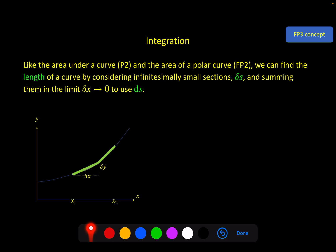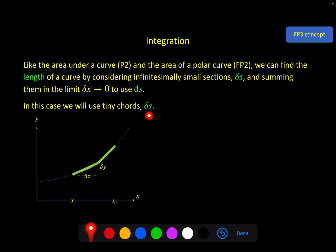As already seen with area under a curve, we can find the length of a curve from x₁ to x₂ by considering infinitesimally small sections. But this time we're not going to use tiny trapeziums or polar sectors — we're going to use tiny chords, which we call delta s. We then let delta x tend to zero so these chords get smaller and smaller, turning delta s into ds in the limit.